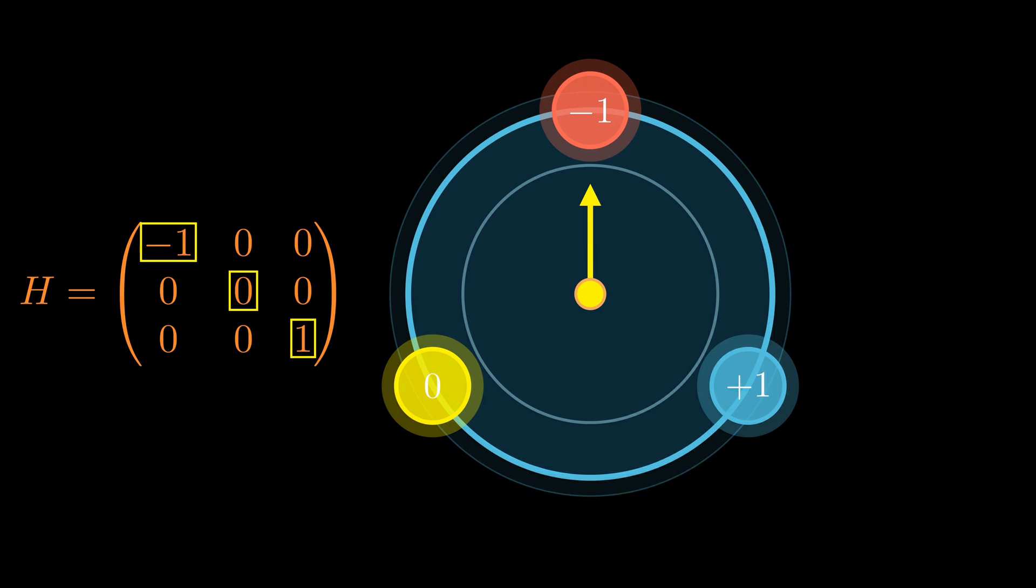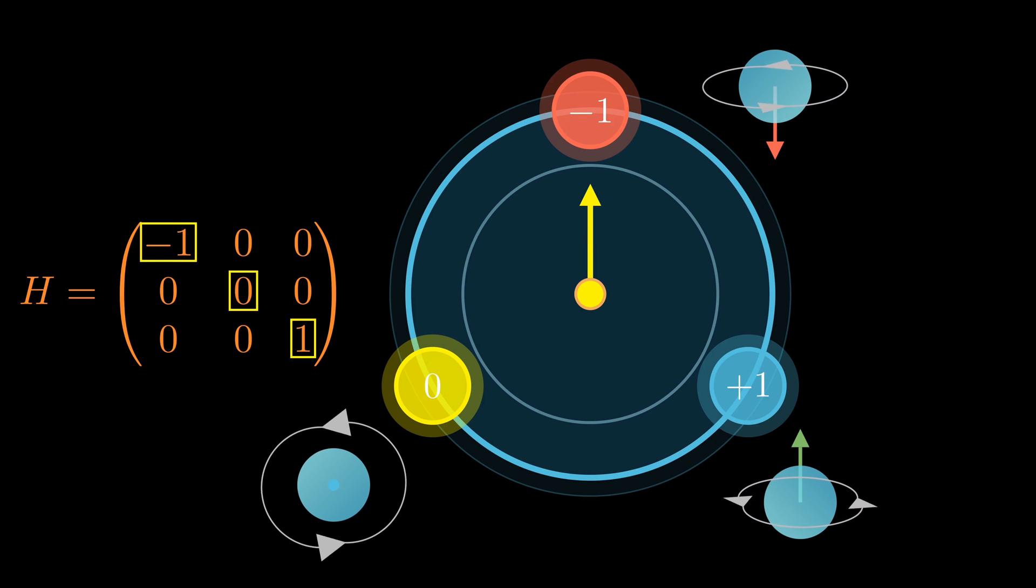Notice something interesting. There are three distinct energy levels here. That means the spin one system has three possible states. This number three will soon become crucial. It's the same as the number of classes our dual machine learning model can classify.